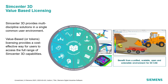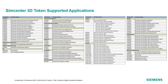Simcenter 3D value-based licensing, or tokens, are the easiest way to access add-on capabilities. If some days you need advanced NAS drain capabilities like multi-step nonlinear, and other days you need laminate composites, or dynamic response, or acoustics, or anything on the list here — tokens will give you access to all of it.